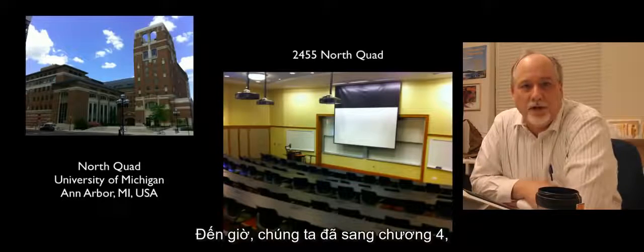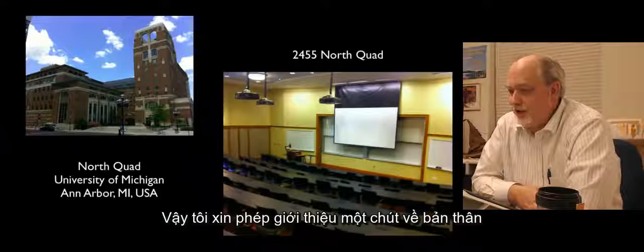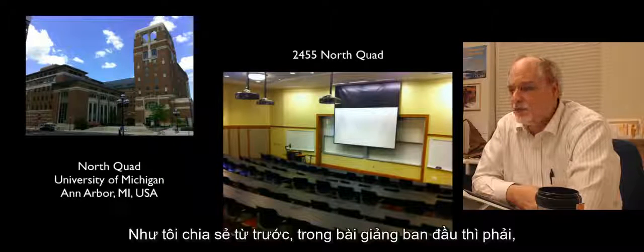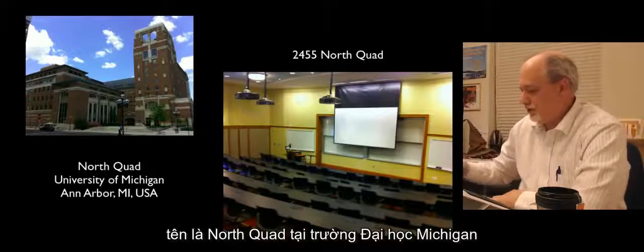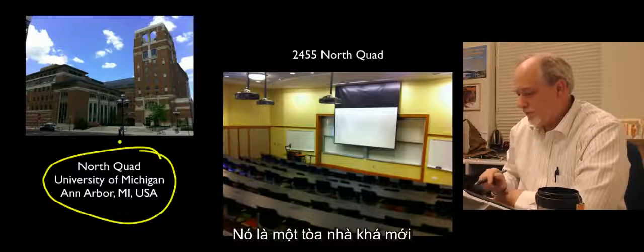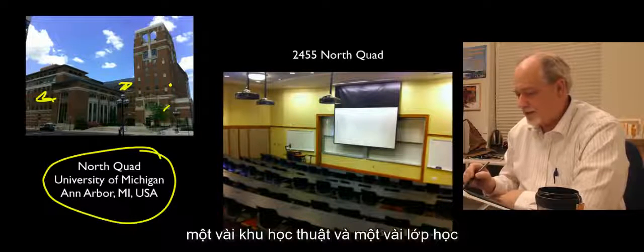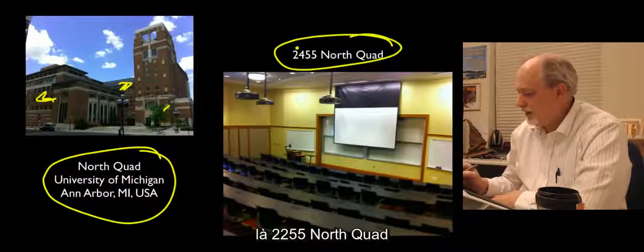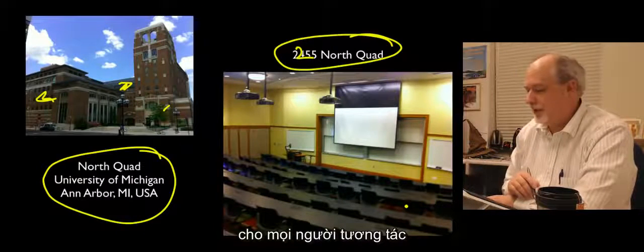Now we are to the point, you know, chapter four, we're sort of well into the class, so I figure I should introduce myself a little bit, let you know a little bit. As I said before, I think in the beginning, I'm taping this in a wonderful building at the University of Michigan called North Quad. It's a relatively new building, it's got some residential sections and some academic sections and some classrooms, and one of the classrooms that I typically teach in is actually 2255 North Quad. It's a really beautiful room with great ways for people to interact.